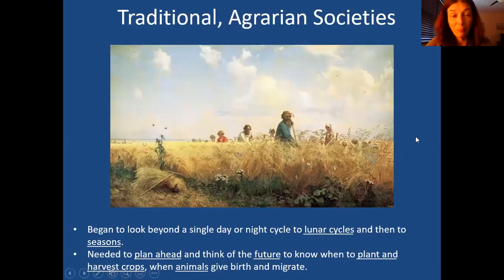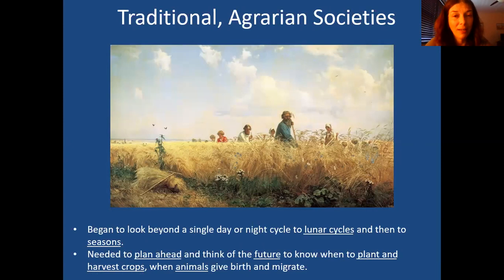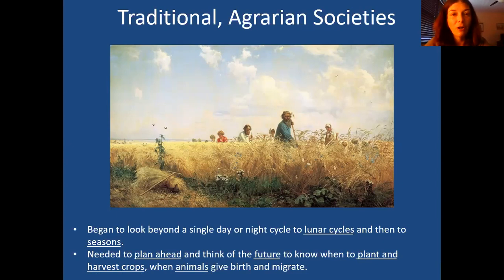Eventually people started planting crops and became an agrarian society — farmers. Then they had to expand their view of time and start thinking about the future: when to plant, tend, and harvest crops. If animals were involved, they had to think about their cycles — when they're born, when they migrate. They might rely on lunar cycles, sun cycles, or seasonal cycles. So a little more future orientation was coming in.